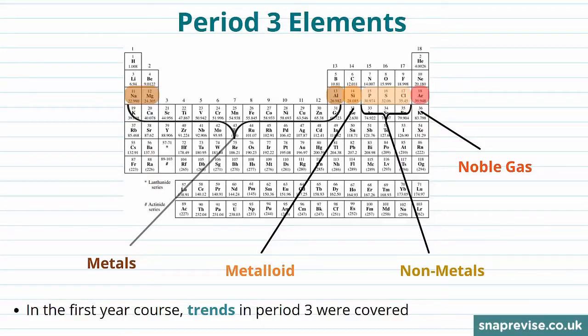In last year's course you will have seen some of the trends of period 3 elements. So remember that on the periodic table, periods go across, they're the rows, so we have period 1, period 2 and period 3.